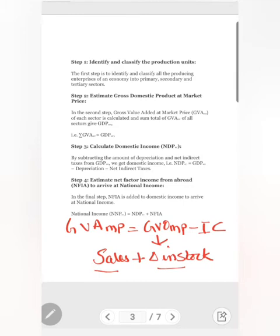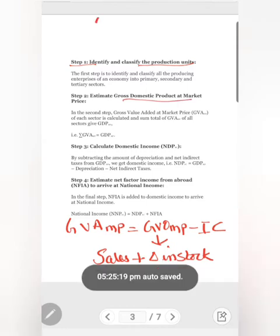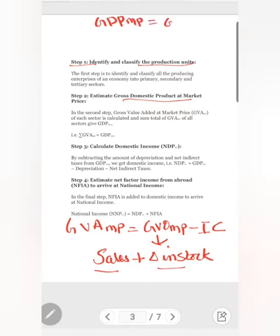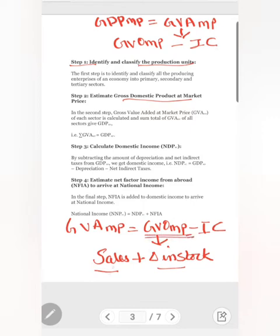Now, the important steps involved in the value added method: Step 1 — identify all the productive units within the domestic territory of an economy. Step 2 — estimate GDP at MP. GDP at MP is equal to gross value added at MP by all firms, and gross value added at MP equals gross value of output at market price minus intermediate consumption. So to find GDP at MP, first find out the gross value of output and then deduct intermediate consumption.